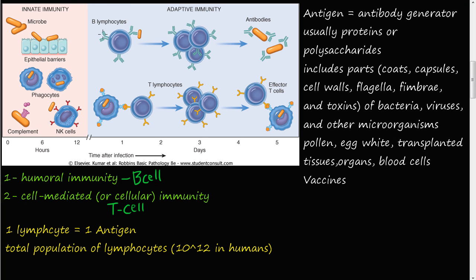Welcome to our discussions on immunity. In previous videos we discussed the innate immunity pathway, which includes epithelial barriers, phagocytes, complements, and natural killer cells. In this video we're going to discuss adaptive immunity — the overall big picture idea of what adaptive immunity is. Innate immunity is quick; it's the first responder.